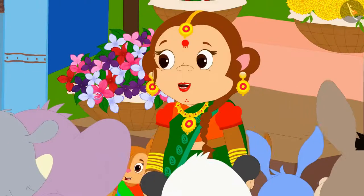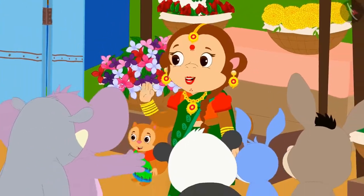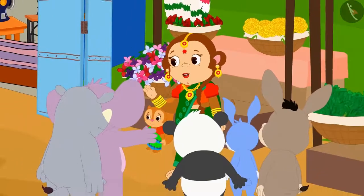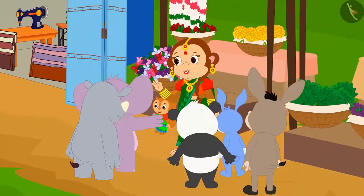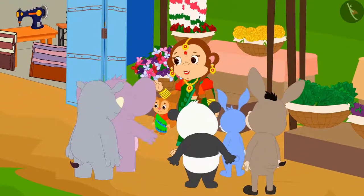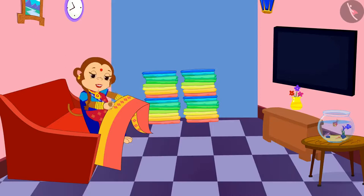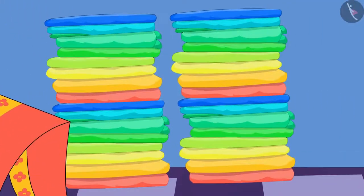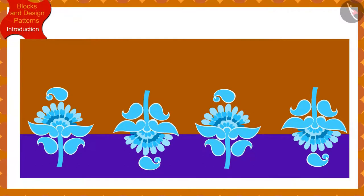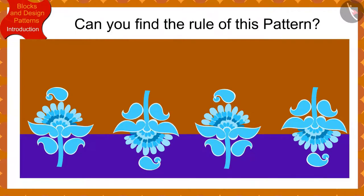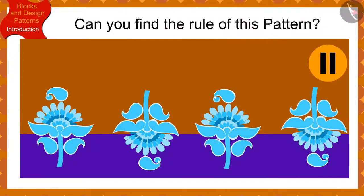Then what was to happen? Banno got orders to make a lot of sarees the next day. Children, if Banno has made such a design on one of the sarees, can you find the rule of this pattern? If you wish to, you may stop the video and think of the answer.